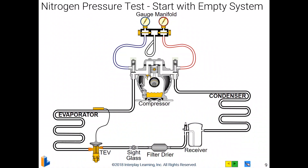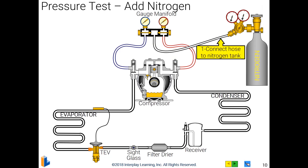Here's a diagram of a refrigeration system. We've looked at just about all these different components except for the sight glass at the bottom — we haven't talked about that yet. We have our gauges hooked up with the red hose going to the high side and the blue hose going to the low side. This is a three-port manifold with an extra hose in the middle — that's our charging hose. We have a nitrogen cylinder with a regulator on it, and we connect our charging hose, typically a yellow hose, to that regulator.